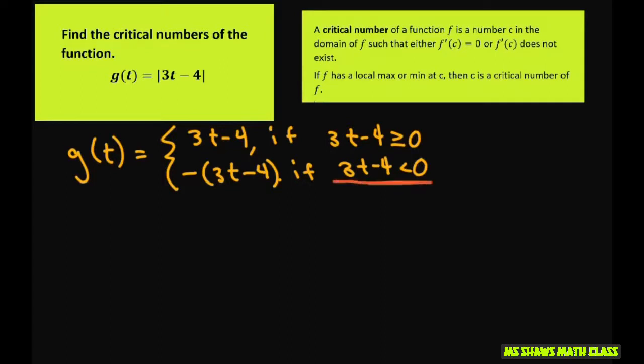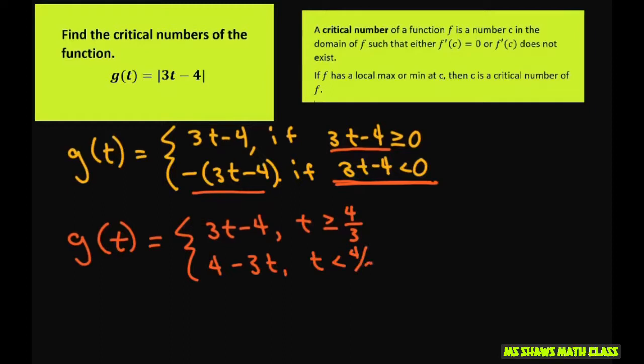Now let's straighten this part up. So we're going to have g(t) equals, we want to know what t is. So we have 3t - 4. And let's solve for t. If you solve for t, you're going to get t ≥ 4/3. And then I'm going to rewrite this. This would be -3t + 4, so I'll put 4 - 3t if t < 4/3.